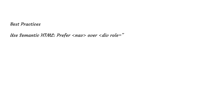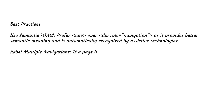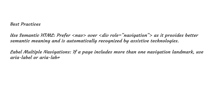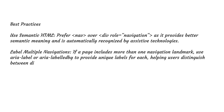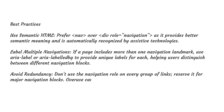Best practices for the navigation landmark. Use semantic HTML: Prefer nav over div role="navigation", as it provides better semantic meaning and is automatically recognized by assistive technologies. Label multiple navigations: If a page includes more than one navigation landmark, use aria-label or aria-labelledby to provide unique labels for each, helping users distinguish between different navigation blocks. Avoid redundancy: Don't use the navigation role on every group of links — reserve it for major navigation blocks. Overuse can make navigating more cumbersome for screen reader users.